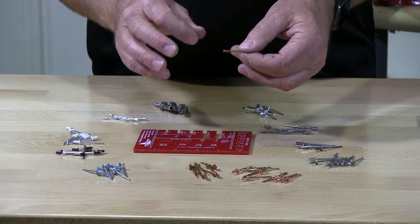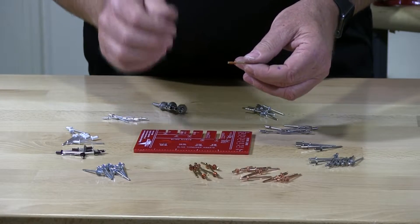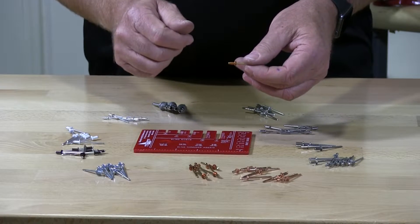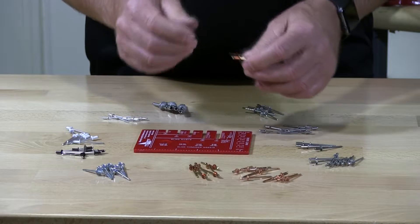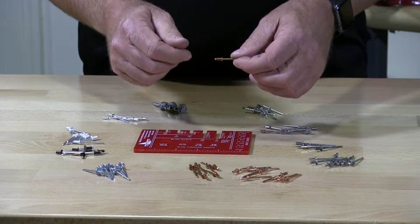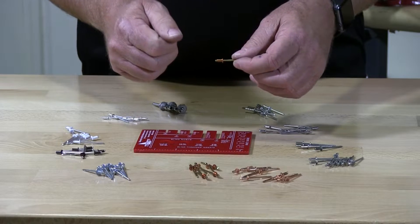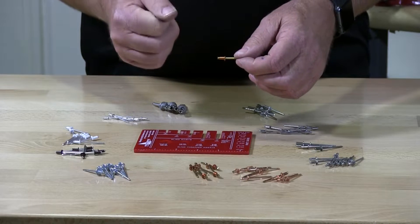A rivet is measured by the installation thickness of the material you're going to be installing it in. So if you're installing two pieces of metal together to select the correct rivet, you need to measure the thickness of those two materials together.